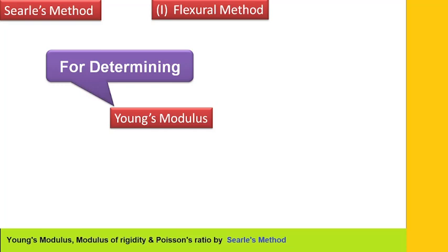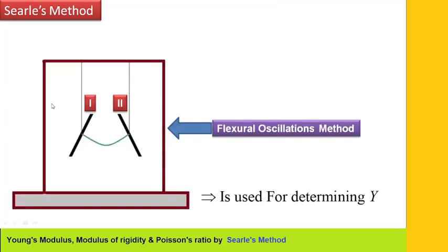First of all, for determining Young's modulus, we will see the flexural method. There are two bars, bar 1 and bar 2. They are attached with a wire which is made up of the material for which we have to determine Young's modulus. This arrangement is called the flexural oscillations method. This metal wire is connected with bar 1 and bar 2 in this manner.